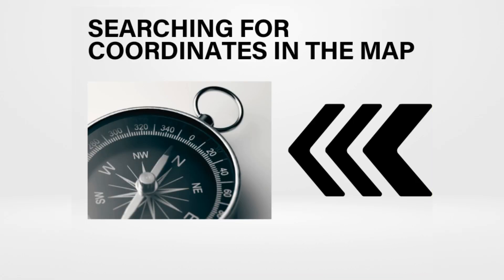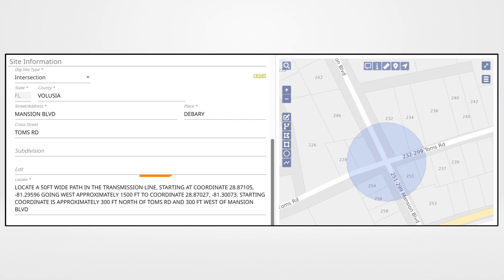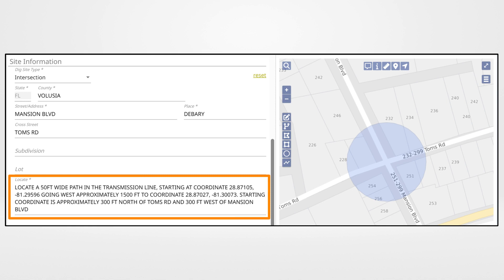In this video, you will learn how to manually map when you already know the GPS coordinates. For this example, locate a 50-foot-wide path in the transmission line, starting at coordinate 28.87105, negative 81.29596, going west approximately 1,500 feet to coordinate 28.87027, negative 81.30073. The starting coordinate is approximately 300 feet north of Tom's Road and 300 feet west of Mansion Boulevard.